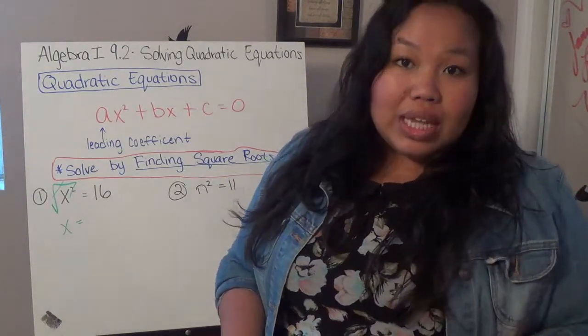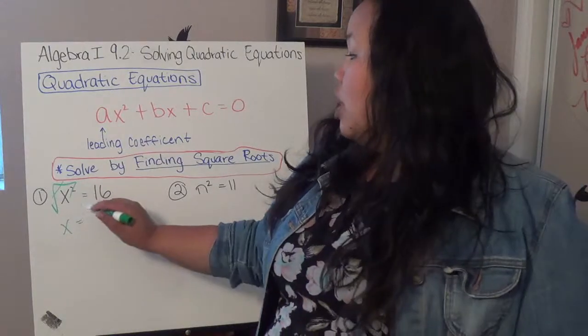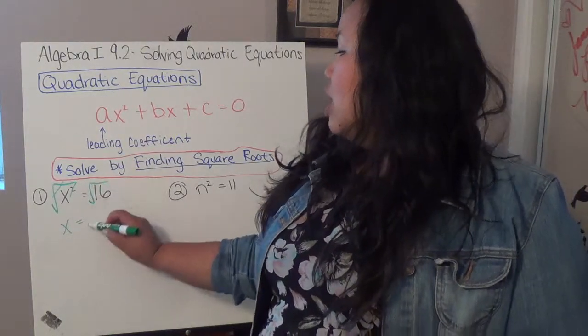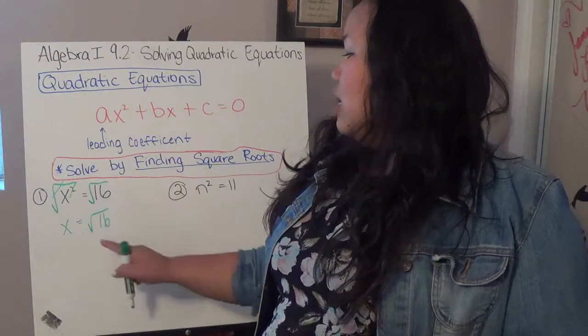But, what I do to one side, I have to do the other. So, if I square root this side, I have to square root this, giving me square root of 16.